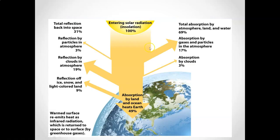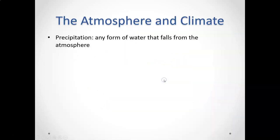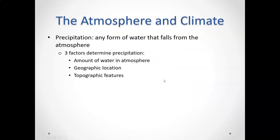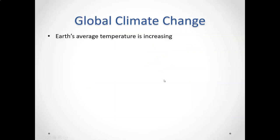If you look at all of the solar radiation that enters and hits the planet, 31% of it is reflected back into space and 69% is absorbed by the atmosphere, the land, and the water. Most of that absorption is heating up the oceans and lands. Precipitation is water that falls from the atmosphere — you can look over those details on your own.